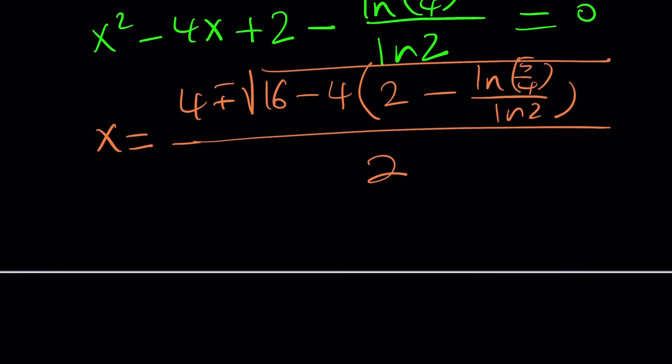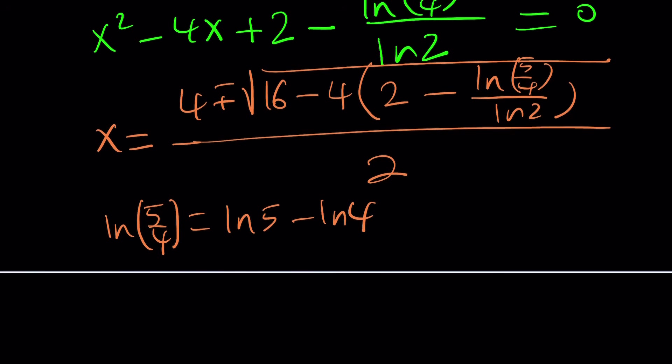Well, maybe it won't make sense if we kind of simplify this ln thing, right? ln five fourths from properties of logarithms can be written as ln five minus ln four. And then you're going to divide it by ln two. And then you'll make a common denominator. Multiply by four. Subtract 16. Subtract it from 16. And then try to take the square root.